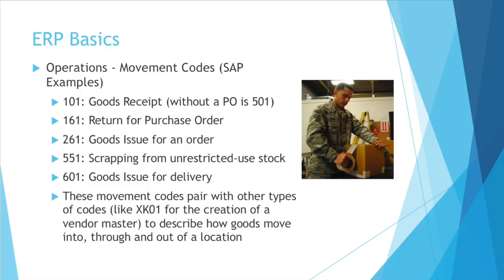Here are some ones I hear the most often. A 101 is a goods receipt; without a purchase order, this would be a 501. A 161 is the return for a purchase order. 261 is goods issue for an order — so if you're going to consume product to make a manufactured good, you issue those components on a 261 movement code. A 551 is scrapping from unrestricted use stock — the scrap code. And 601 is goods issue for delivery, so this is when you are shipping something out.